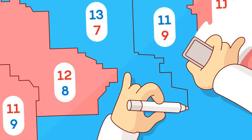The math behind gerrymandering and wasted votes. Imagine fighting a war on 10 battlefields. You and your opponent each have 200 soldiers, and your aim is to win as many battles as possible. How would you deploy your troops?